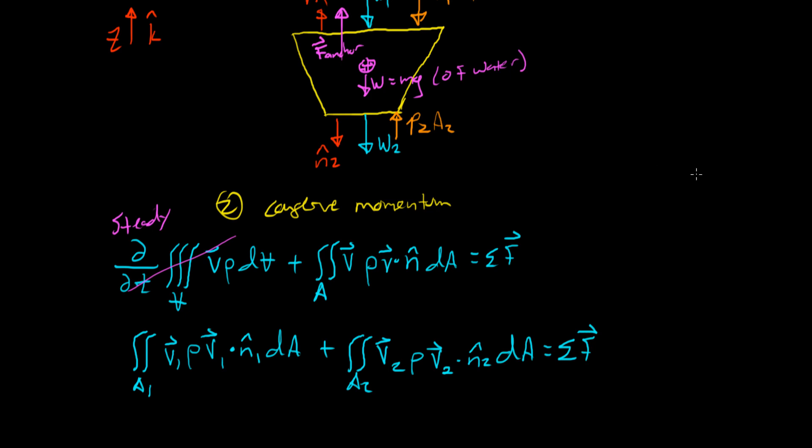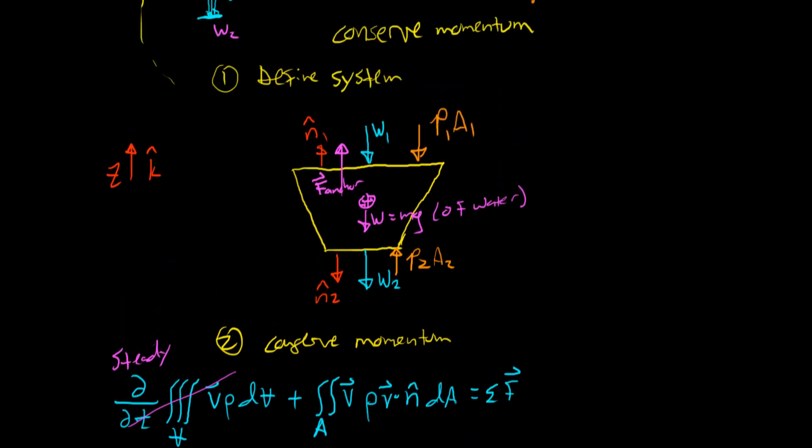And so we can go ahead and write out integral over A1 of V1 rho V1 dot N1 dA plus the integral over A2 of V2 rho V2 dot N2 dA. And that has to be equal to the sum of the forces. All right, time to work out some coordinates here.